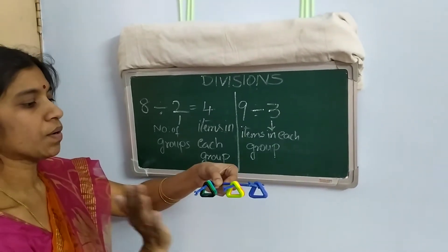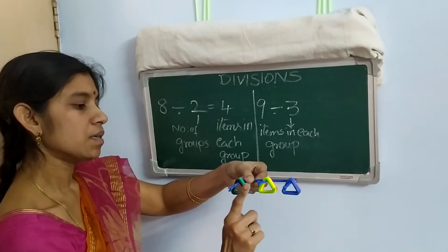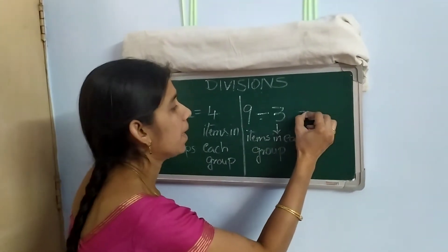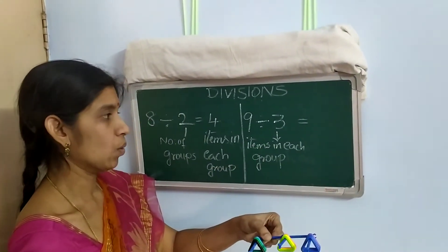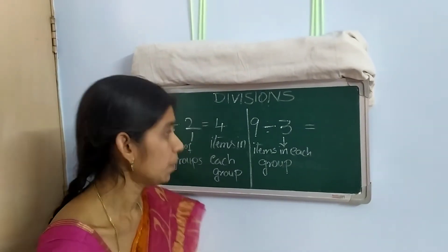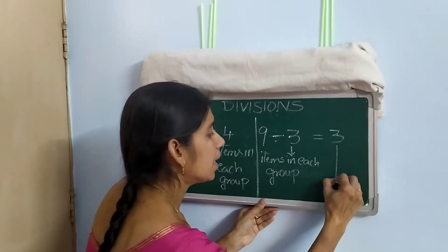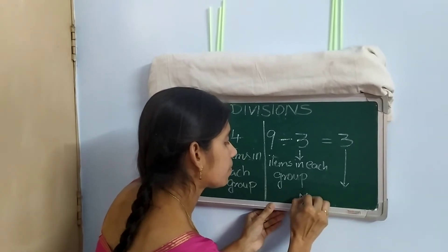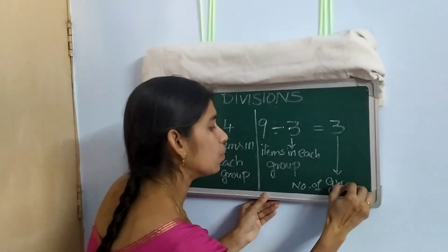No more triangles are there with me. How many groups did I form? One, two, three. So here, the items in each group were known from the start. The number of groups I formed is one, two, three — so three is the answer. That is the number of groups.